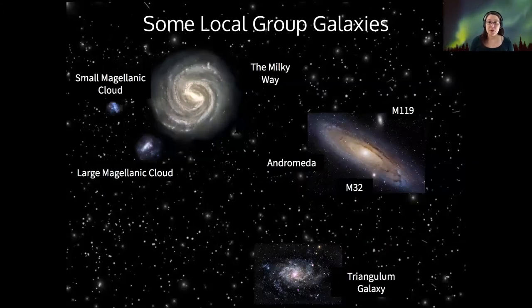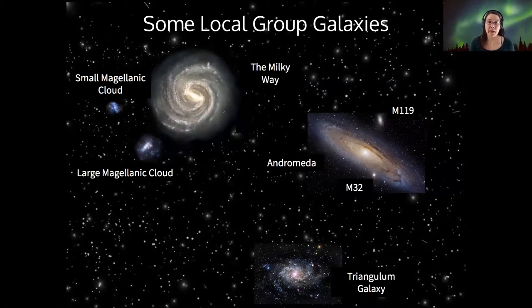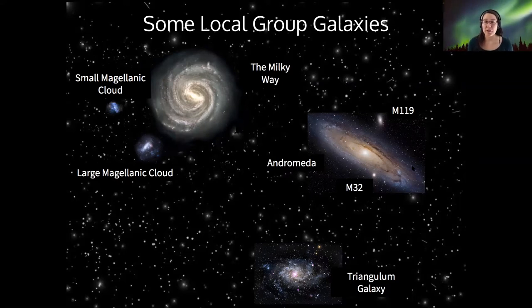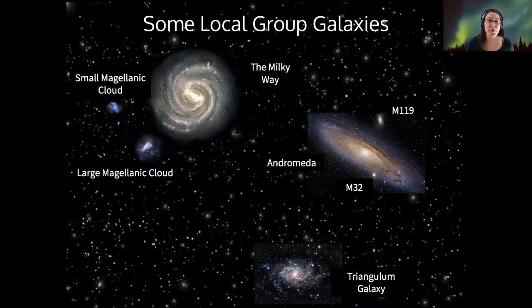I want to start with an example of some of the numbers that we see in astronomy. So here are some of the galaxies in our local group of galaxies. Remember, the Milky Way and Andromeda are the largest members of our local group, and the local group is one group in the Virgo supercluster that we're a part of.